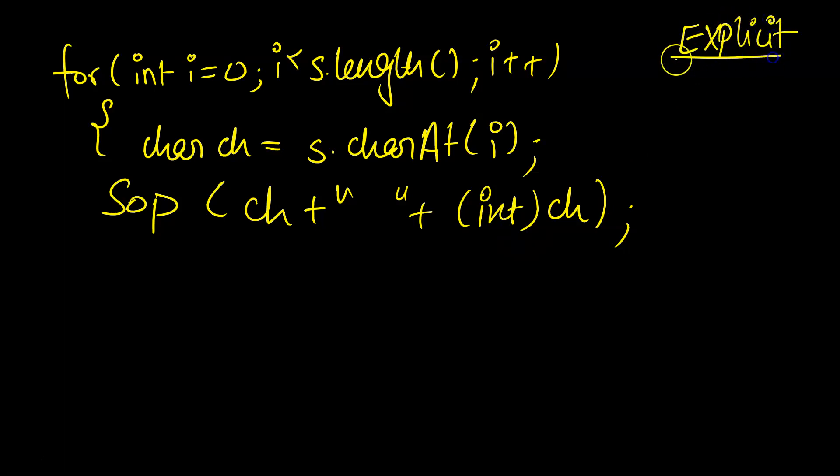Explicit conversion means the conversion that is done by the user forcefully. It is done by force because the computer will normally print the ch, that is the character, but I don't want the character—I want its ASCII value—so I wrote int before the character intentionally. When you convert something intentionally, it is known as explicit conversion in Java or any other language.